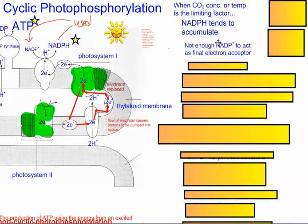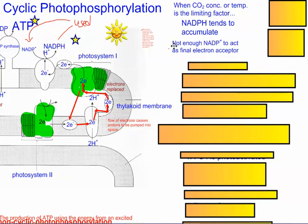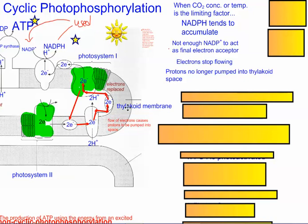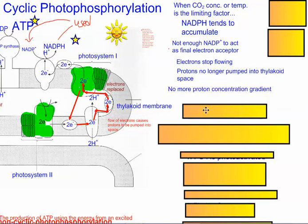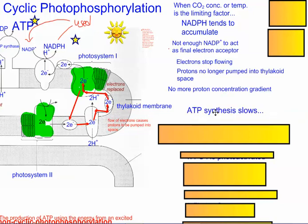If that accumulates, then we don't get any NADP+ coming back, right? Because we have a bunch of charged batteries and then we run out of these guys. In order to get more of these guys, this guy has to go somewhere, drop off its H, and then come back as NADP+. So there's not enough NADP+ as a final electron acceptor. If there's no final electron acceptor, then the electrons will stop flowing. If they stop flowing, then protons won't be brought into the thylakoid space anymore. If that's the case, then there's no more proton concentration gradient. And in that case, ATP synthesis actually slows.